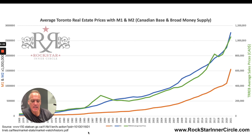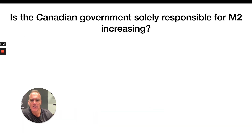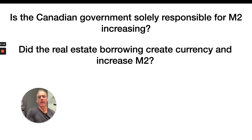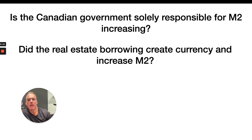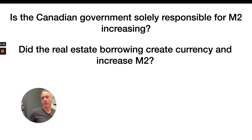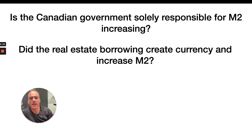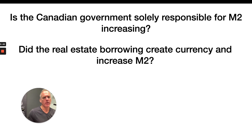As the currency increases, the value of our dollars is going down. It gives me different thoughts: is the Canadian government solely responsible for M2 increasing, or does real estate borrowing create currency and increase M2? When you and I go to the bank and sign paperwork to get a mortgage, we are creating money. If you've taken a mortgage and borrowed new money, then give it to someone else who puts it in their savings account — is that counted as M2? Did buying more real estate just create more M2?